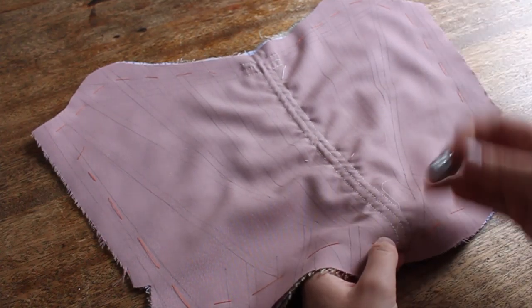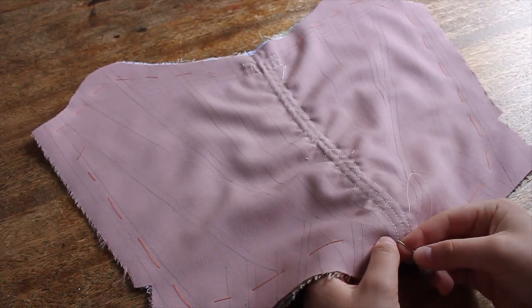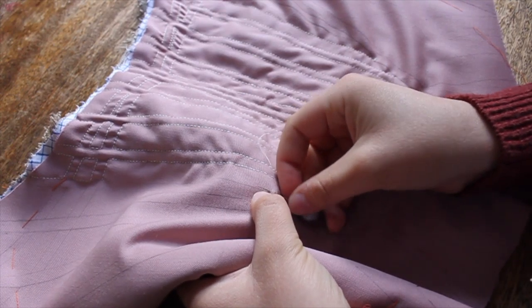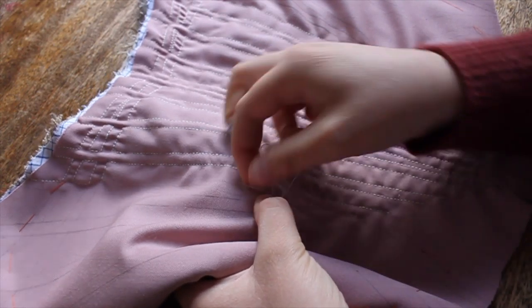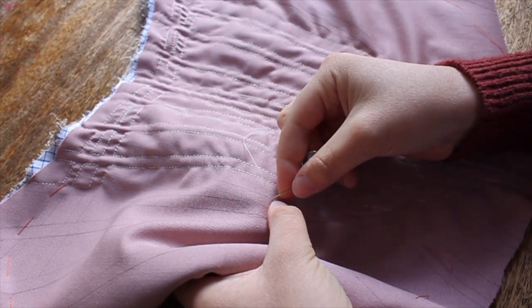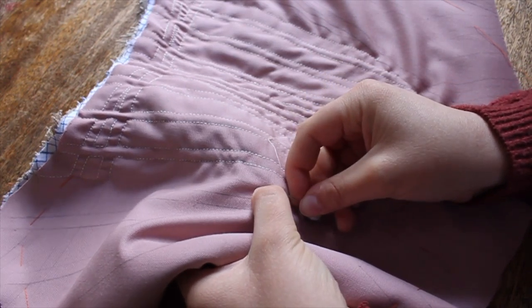Nonetheless, my fabric warped significantly as I was sewing. This will be less noticeable once the boning is added, but I ironed the panel midway through stitching channels to smooth some of the warping.